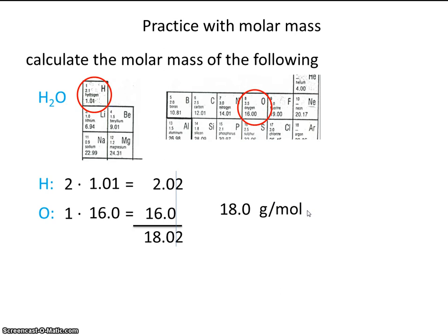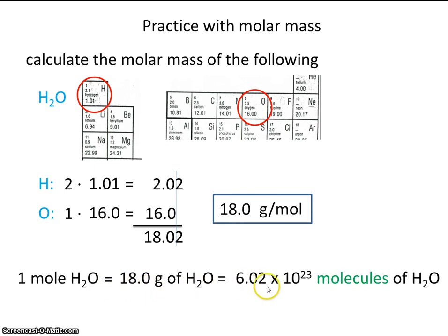By the way, 18 grams of water is equal to about one sip, one small sip of water. So do you remember this conversion factor here? One mole of water is equal to 18 grams of water, and that would be equal to 6.02 times 10 to the 23rd molecules of water.